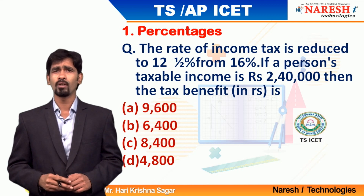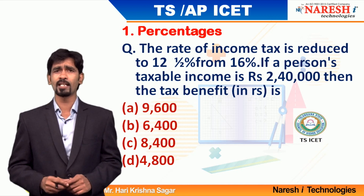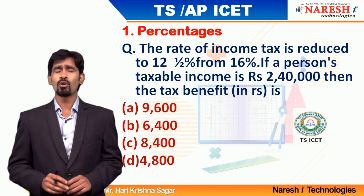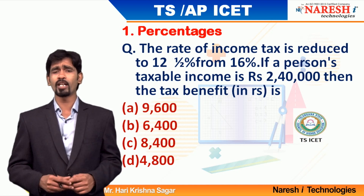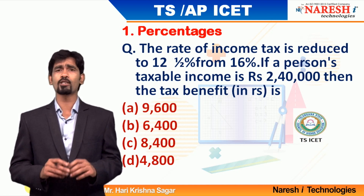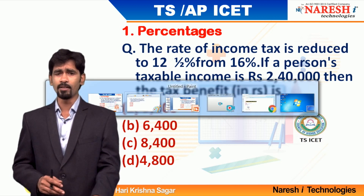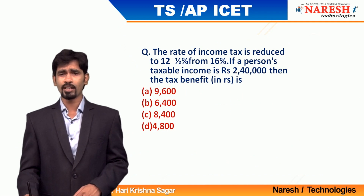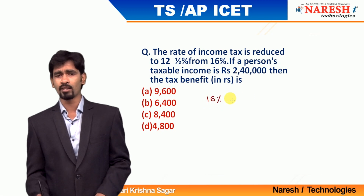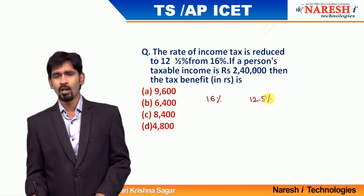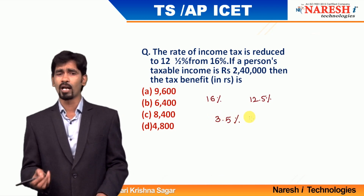What is the reduced value? The reduced value will be equal to 3.5 percentage — that is 16 minus 12.5. If the total taxable amount is 2,40,000 rupees, they are expecting you to find out the tax benefit. It is very clear there is a reduction in the tax. Initially 16 percentage was the tax, now you are only paying 12.5 percentage. The reduction in tax will be 3.5 percentage of the total taxable amount.